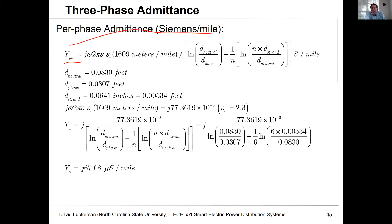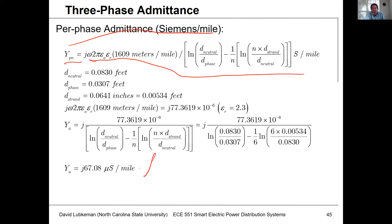Assuming the electric field is confined within each cable, we're just going to have self-capacitances — no mutual capacitances. There's a pretty involved formula here because we had the concentric neutral wires. Anyway, what we end up with in this particular case is an equivalent admittance of j·67.08 microsiemens per mile.